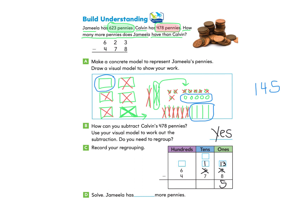Now we look at the tens column. We had 1 group of 10 and needed to subtract 7, but we didn't have enough. So we went over to the hundreds and took 1 of the 100s and crossed it out. We regrouped and made 10 groups of 10. There were 6 hundreds — we crossed 1 out — and that left 5, so we put 5 here for the new number of hundreds.